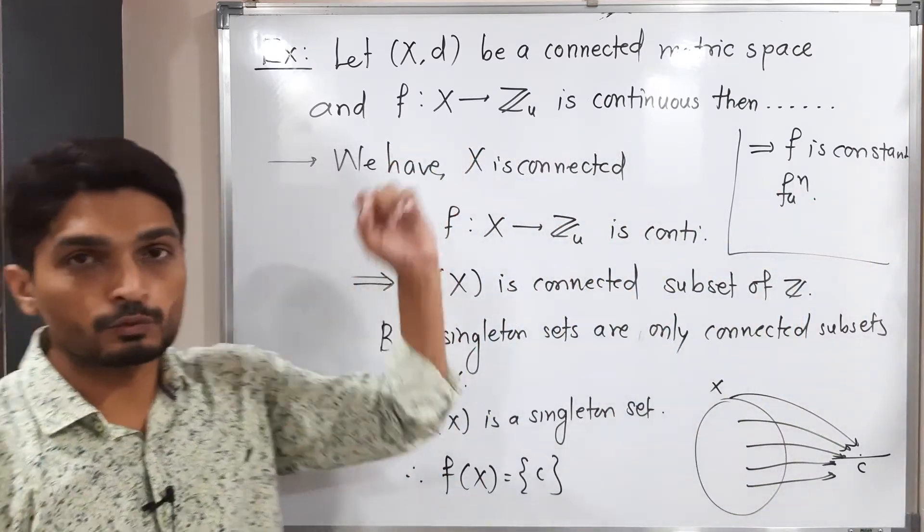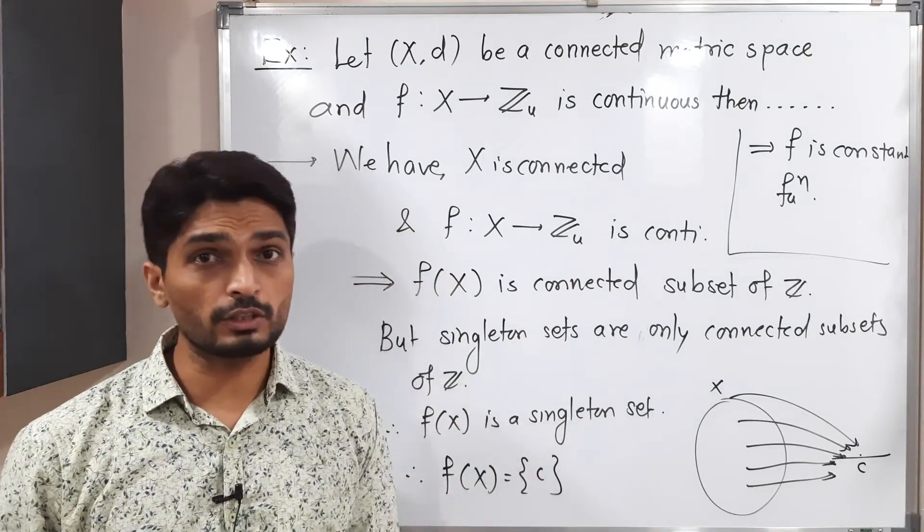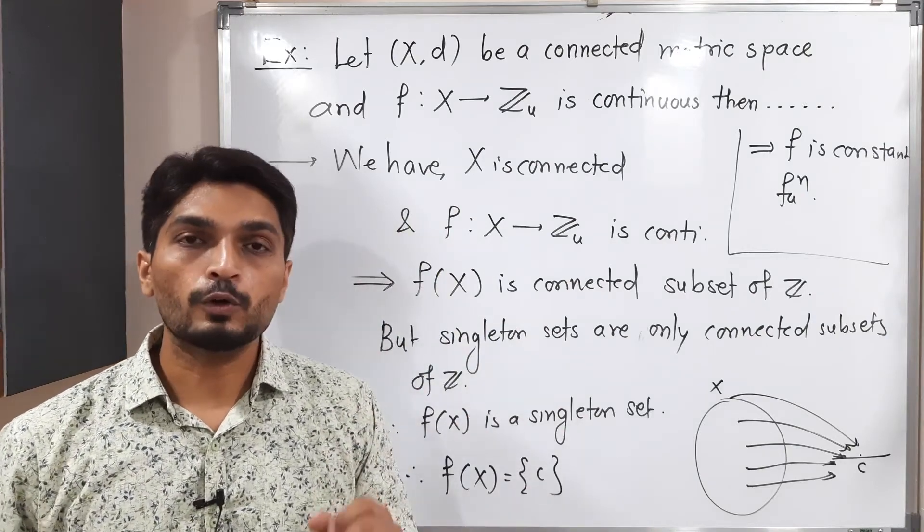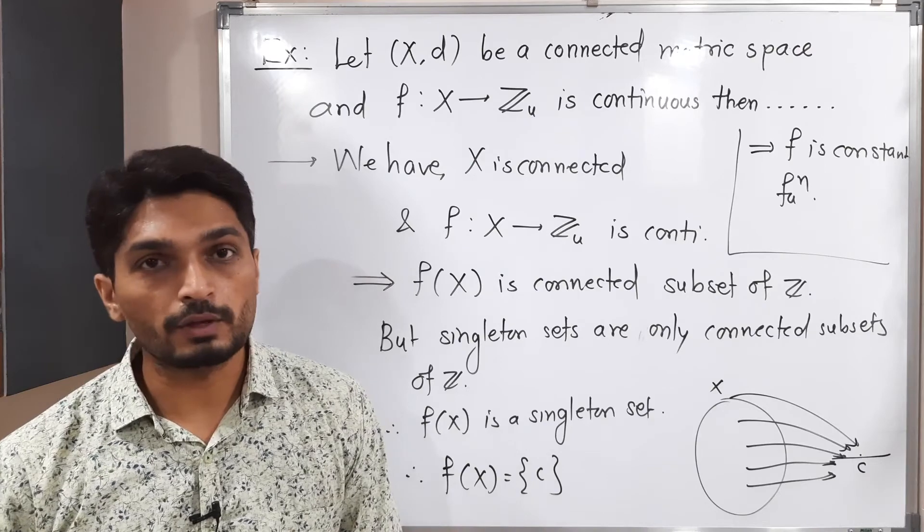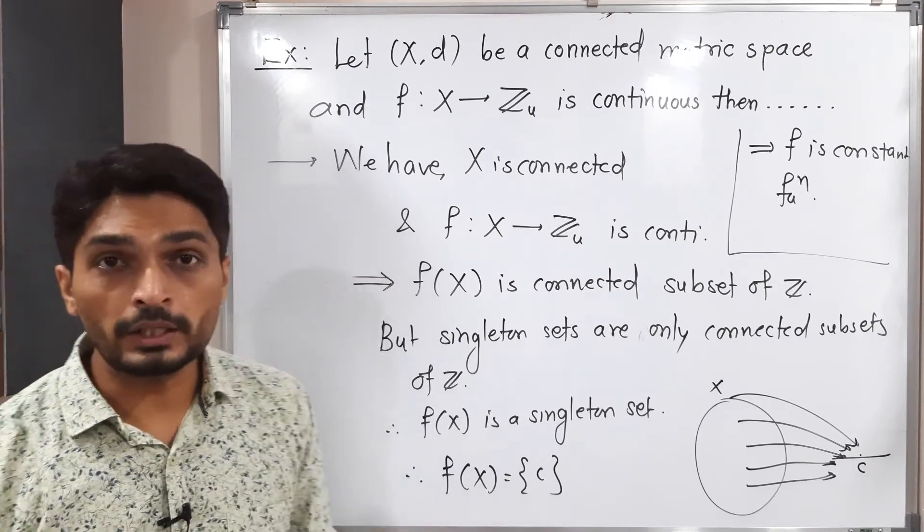That means if you have any function which is from X to Z which is continuous, then that function should be constant function. Very important result we have got. So this example is over here.